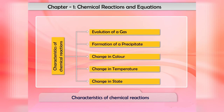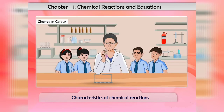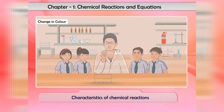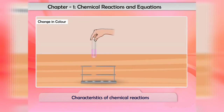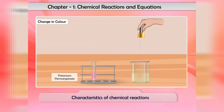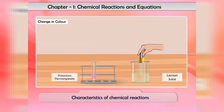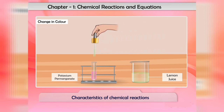Now we will discuss the third characteristic: change in color. When citric acid reacts with potassium permanganate solution, the purple color of potassium permanganate solution becomes colorless.